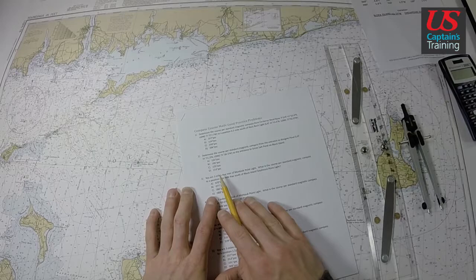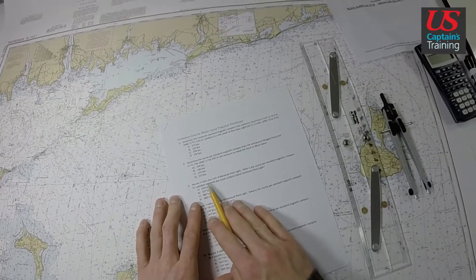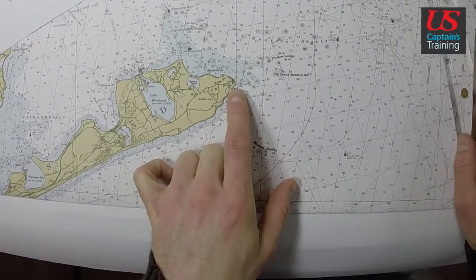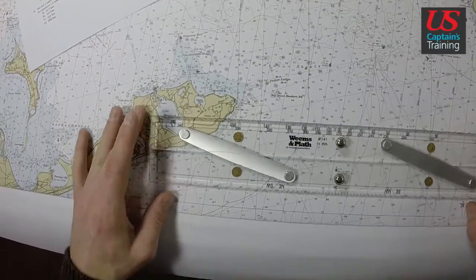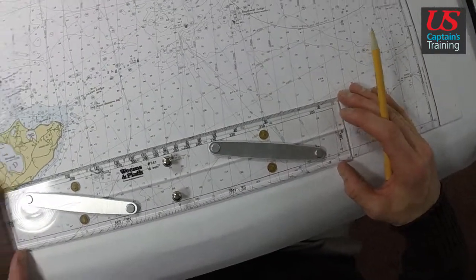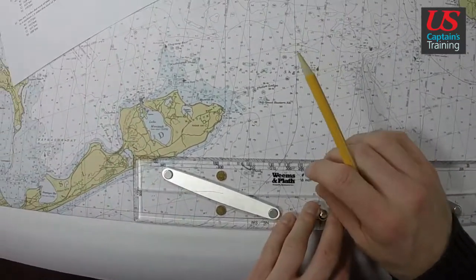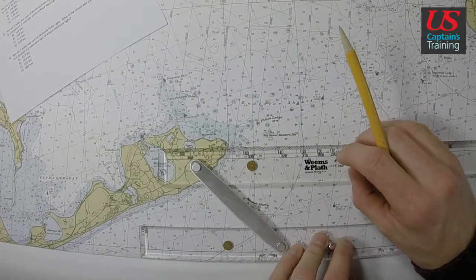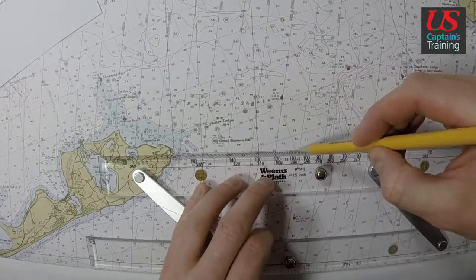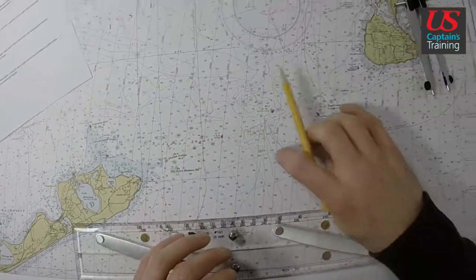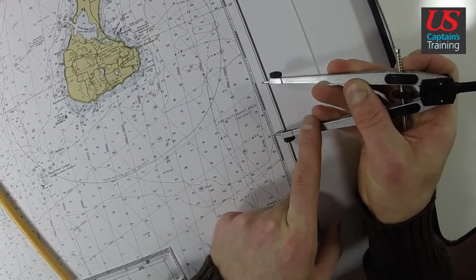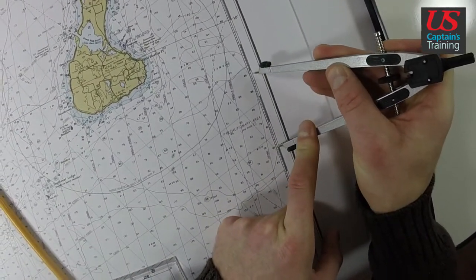The first step is we need to find our starting position 3 miles due east of Montauk Point Light. Here's Montauk Point Light. It's in your light list if you need to find it. We line up the parallel rules on a parallel, walk it up to Montauk Point Light right with that dot here. Strike a line that's at least 3 nautical miles long. We go to our latitude scale with our dividers and we get 3 nautical miles.